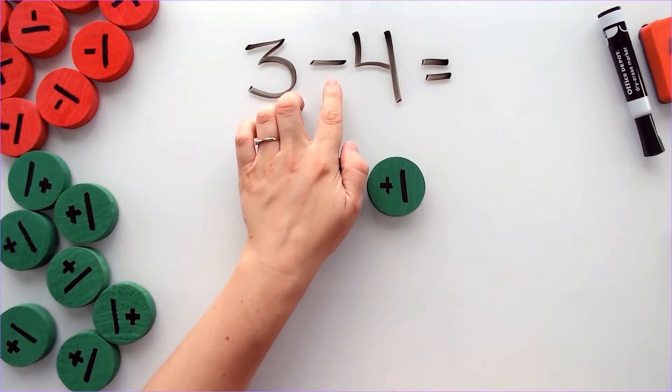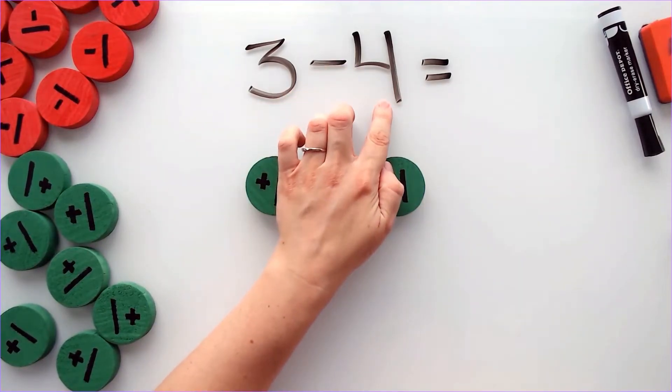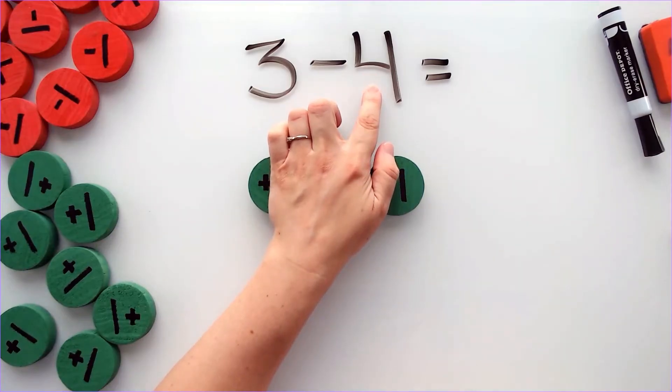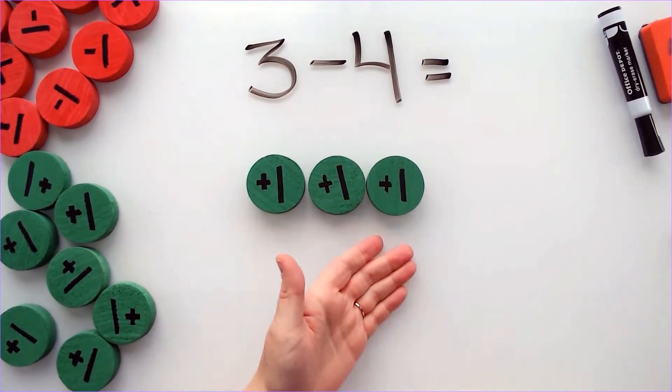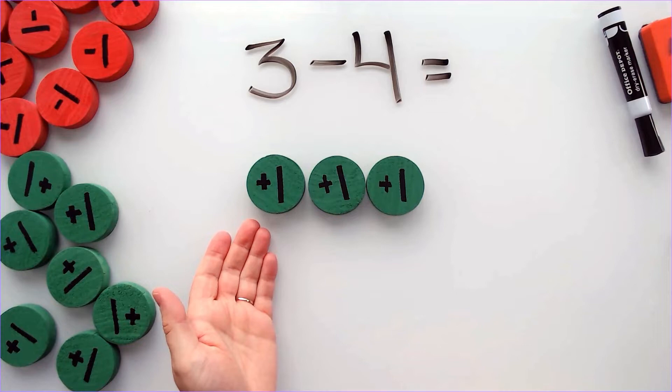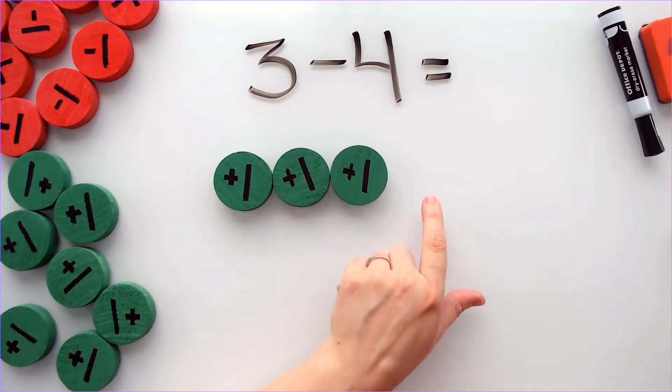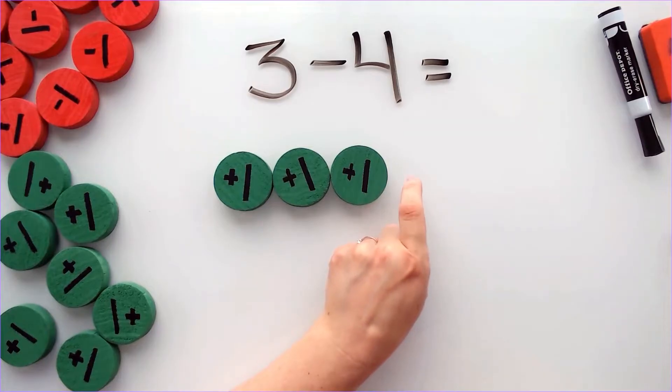Now, the problem is telling me to take away 4, and what this means is take away 4 positives. But I don't have 4 positives. I have 3. In order to have 4 positives, means I need 1 more positive.